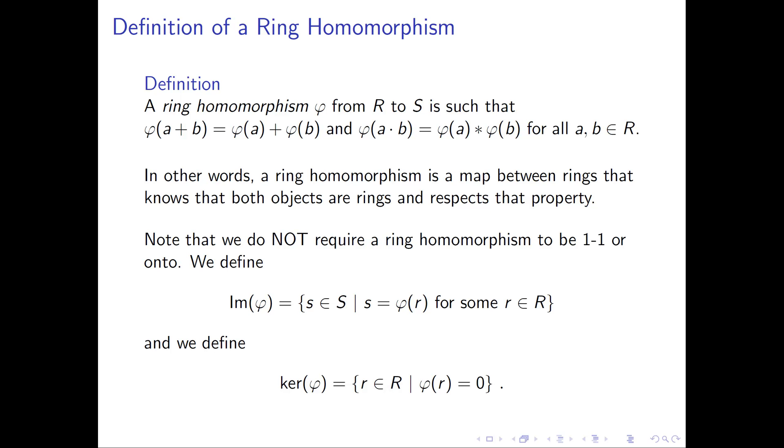Note that just like with group homomorphisms, we don't require a ring homomorphism to be one-to-one, or I'll sometimes say injective instead of one-to-one, and we don't require that the ring homomorphism be onto, which I will sometimes call surjective. What we need are a few more definitions to capture what do we map onto and how far away are we from being one-to-one.